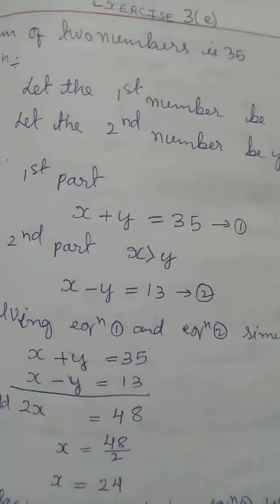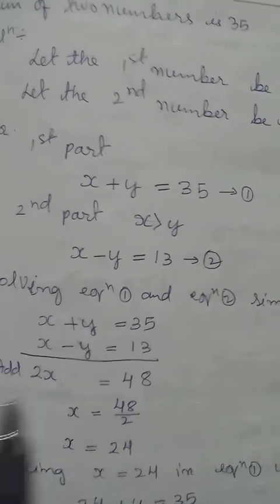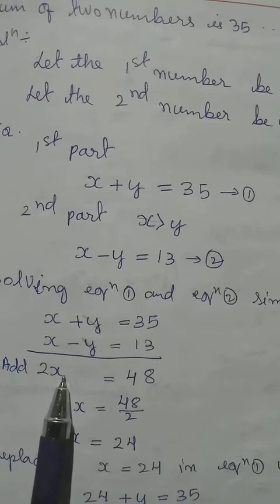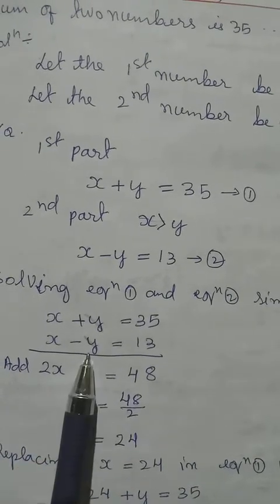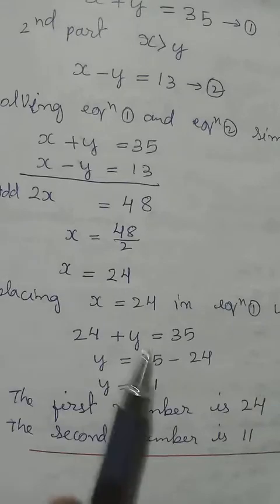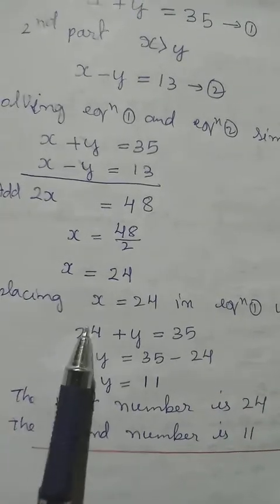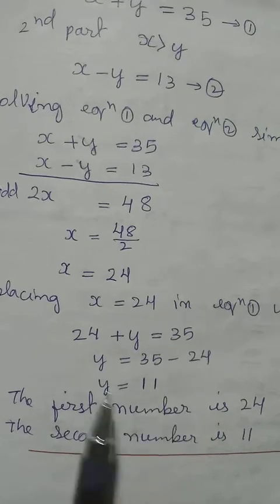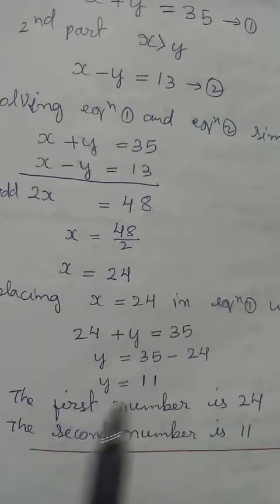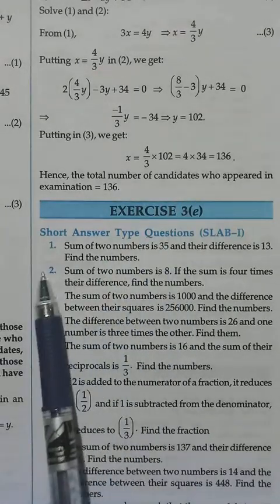Both coefficients are equal, so we can add the equations directly. Adding: 1 plus 1 gives 2x; the y terms cancel. 35 plus 13 equals 48, so x equals 48 divided by 2, which equals 24. Substituting x equals 24 into equation 1: 24 plus y equals 35, so y equals 11. The first number is 24 and the second number is 11.